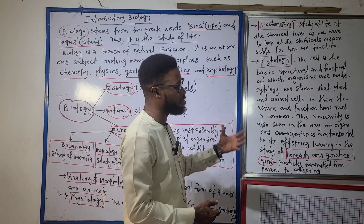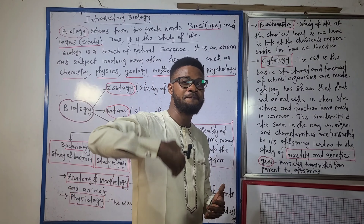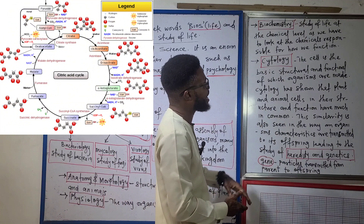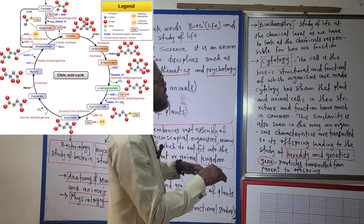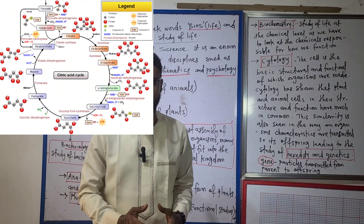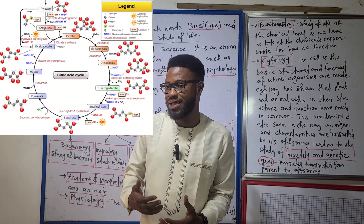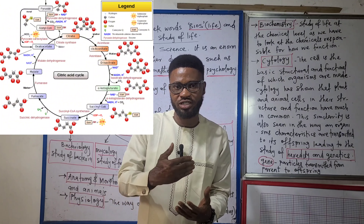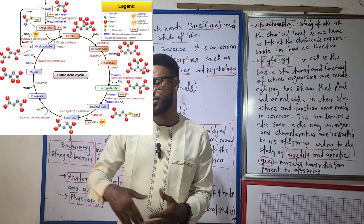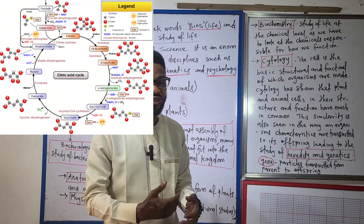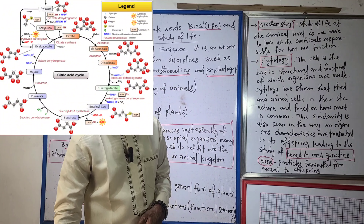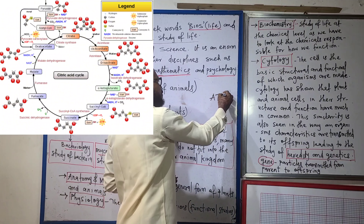Moving away from physiology, we talk biochemistry — those functional studies have become chemical. Biochemistry is the study of life at the chemical level. We look at the chemicals responsible for how we function. For instance, if I have eaten carbohydrates, the carbohydrate is broken down into glucose, which then needs to be oxidized. That's why I take in oxygen — the glucose and oxygen go into the cells in what is called cellular respiration, so that adenosine triphosphate (ATP), the energy I need to survive, is released.